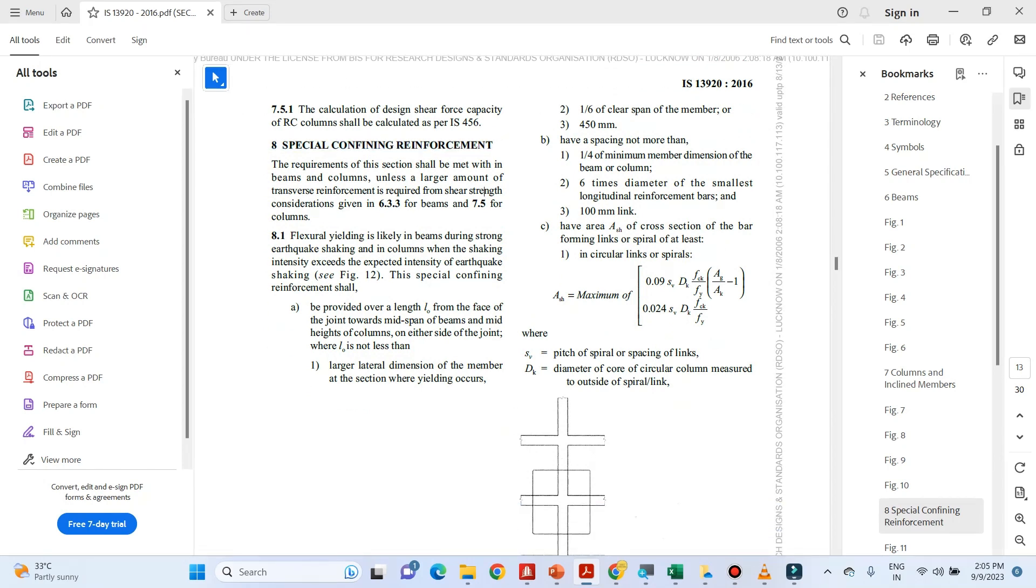So here you can see that flexural yielding is likely in beams during strong earthquake shaking and in columns when shaking intensity exceeds the expected intensity of earthquake shaking. So this special confining reinforcement shall be provided over a length L0 from the face of the joint towards the mid span of beams and mid height of columns on either